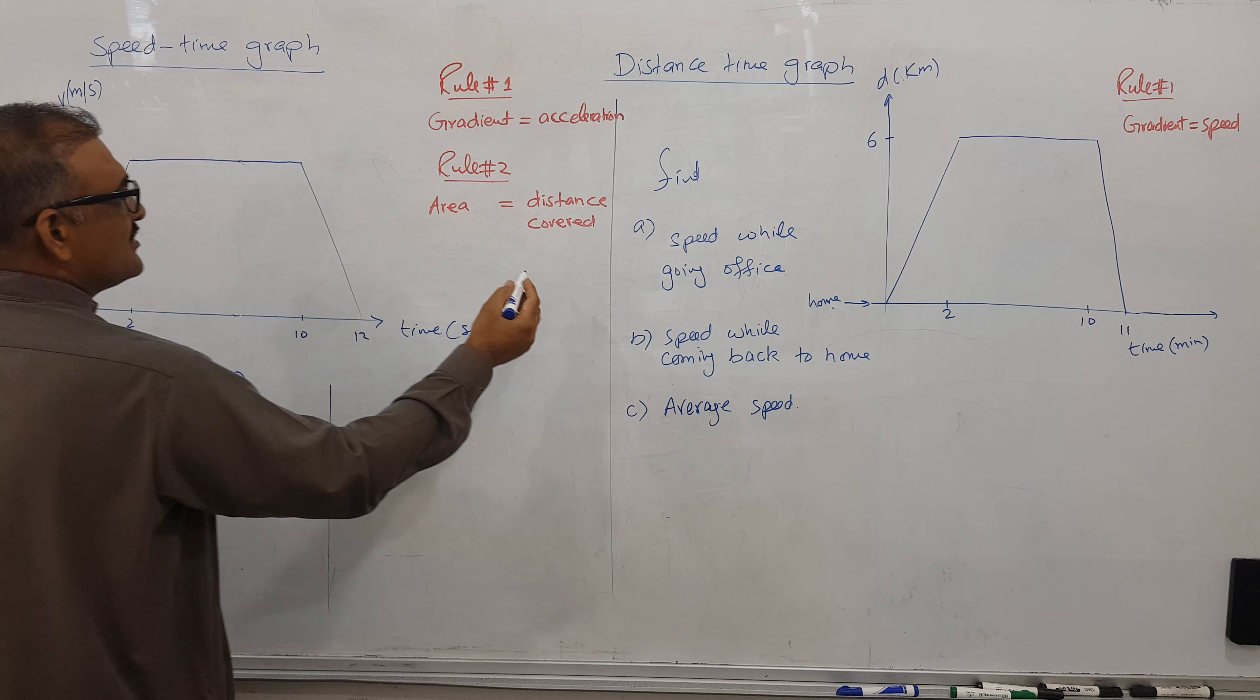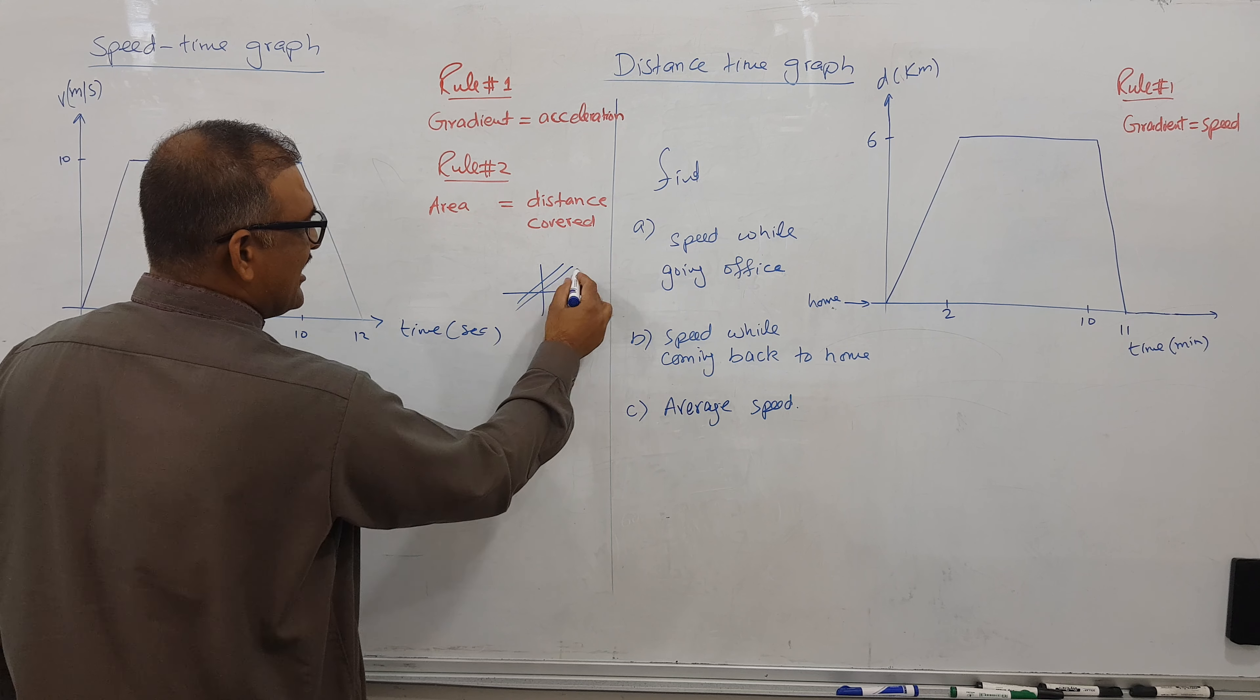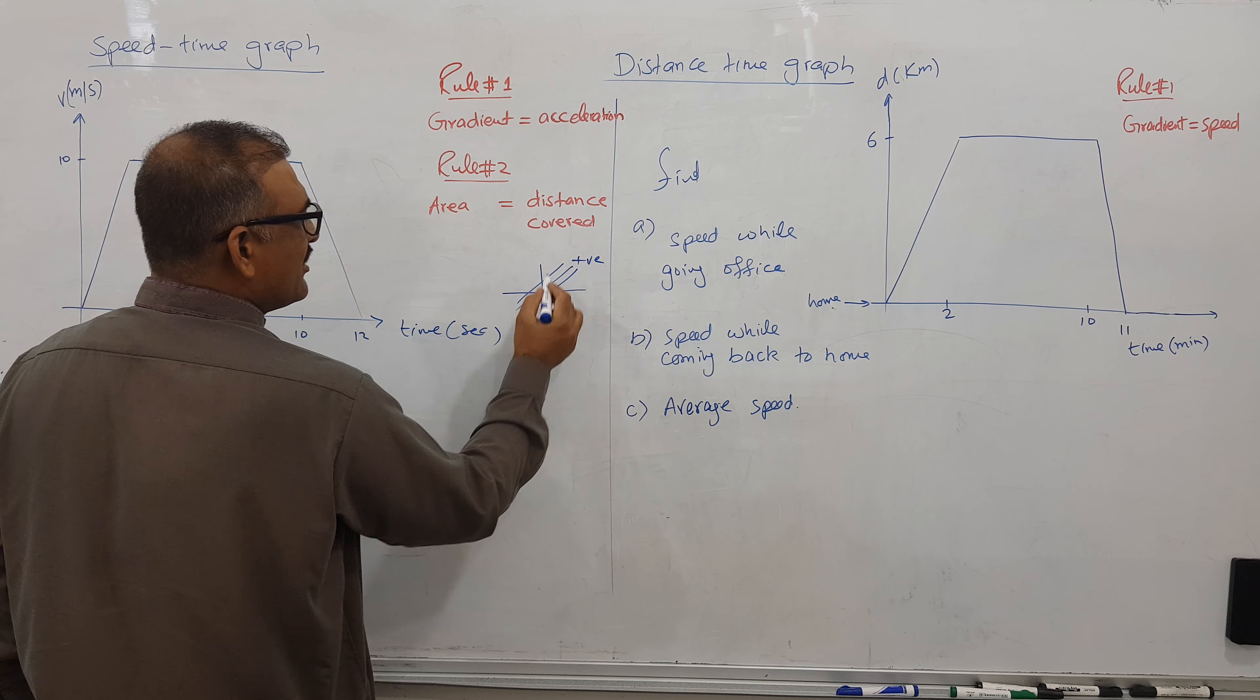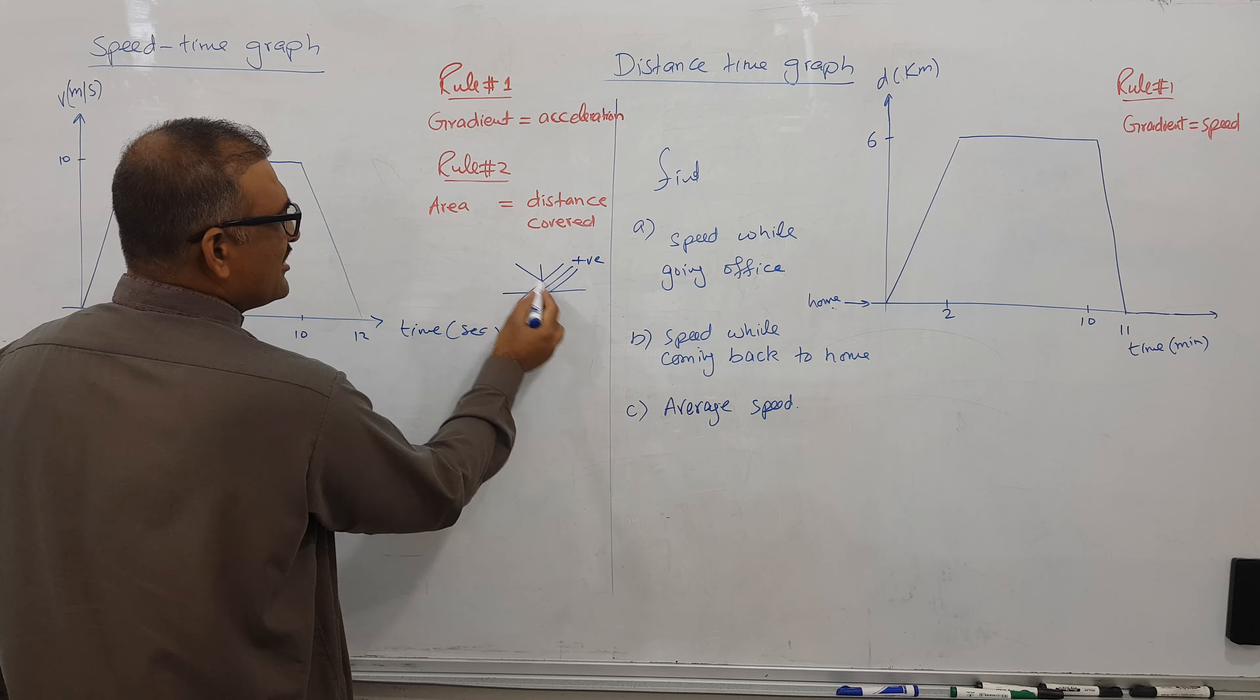First, finding acceleration. All of you know that lines going this way have positive gradient, and this way negative gradient. Positive is called acceleration and negative is called deceleration. This line is ascending so this is acceleration, and this line is descending so it means deceleration.